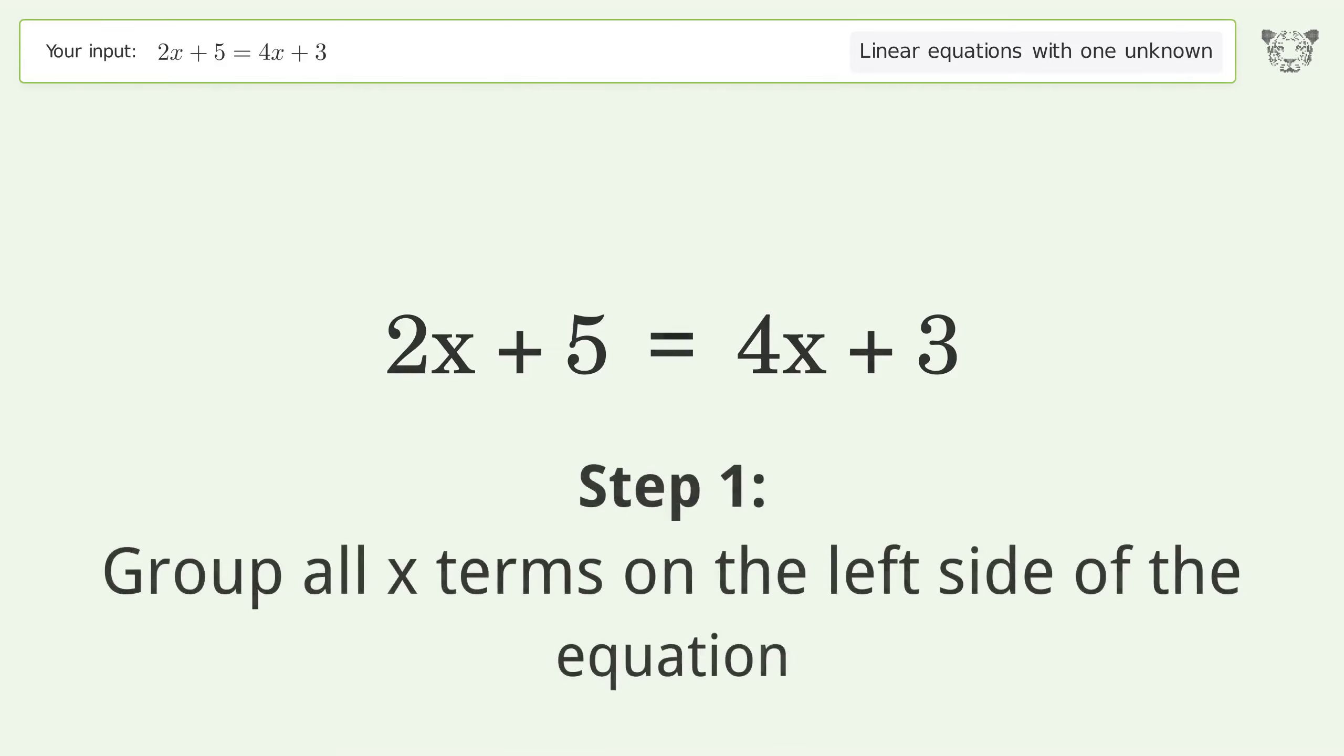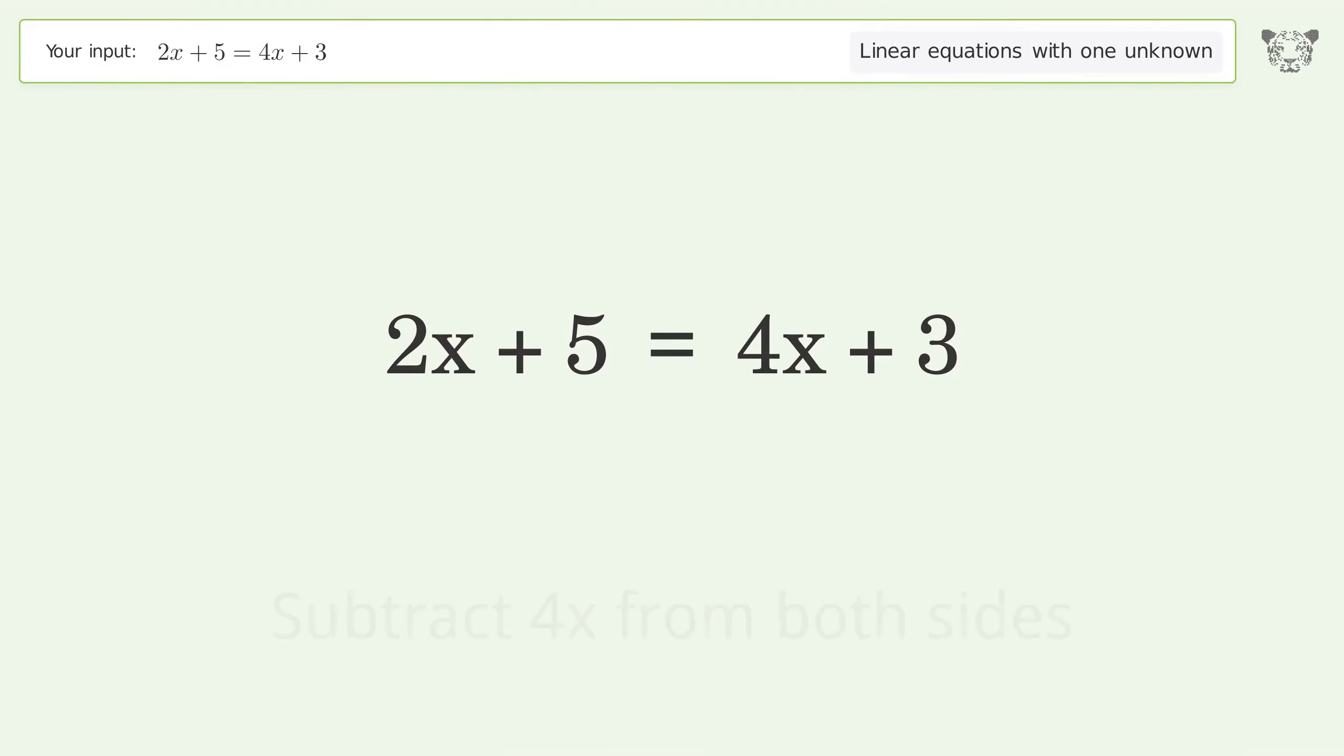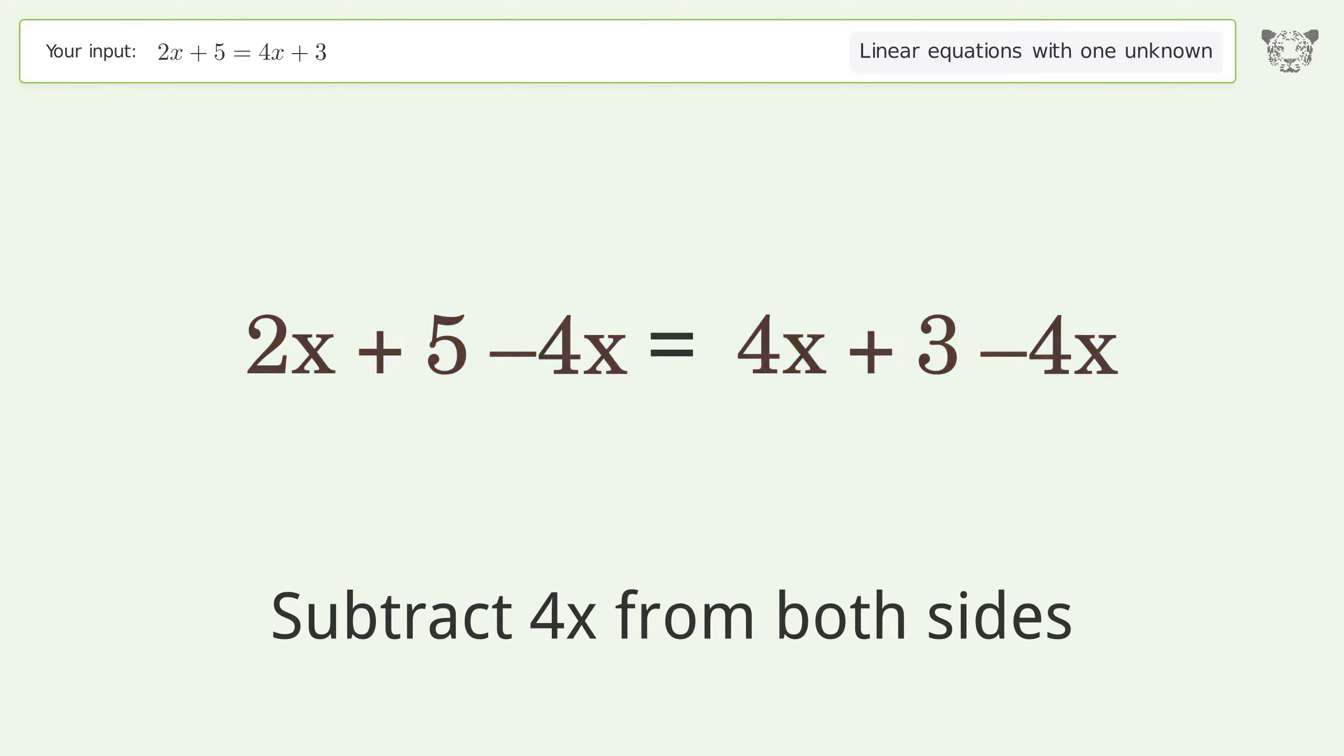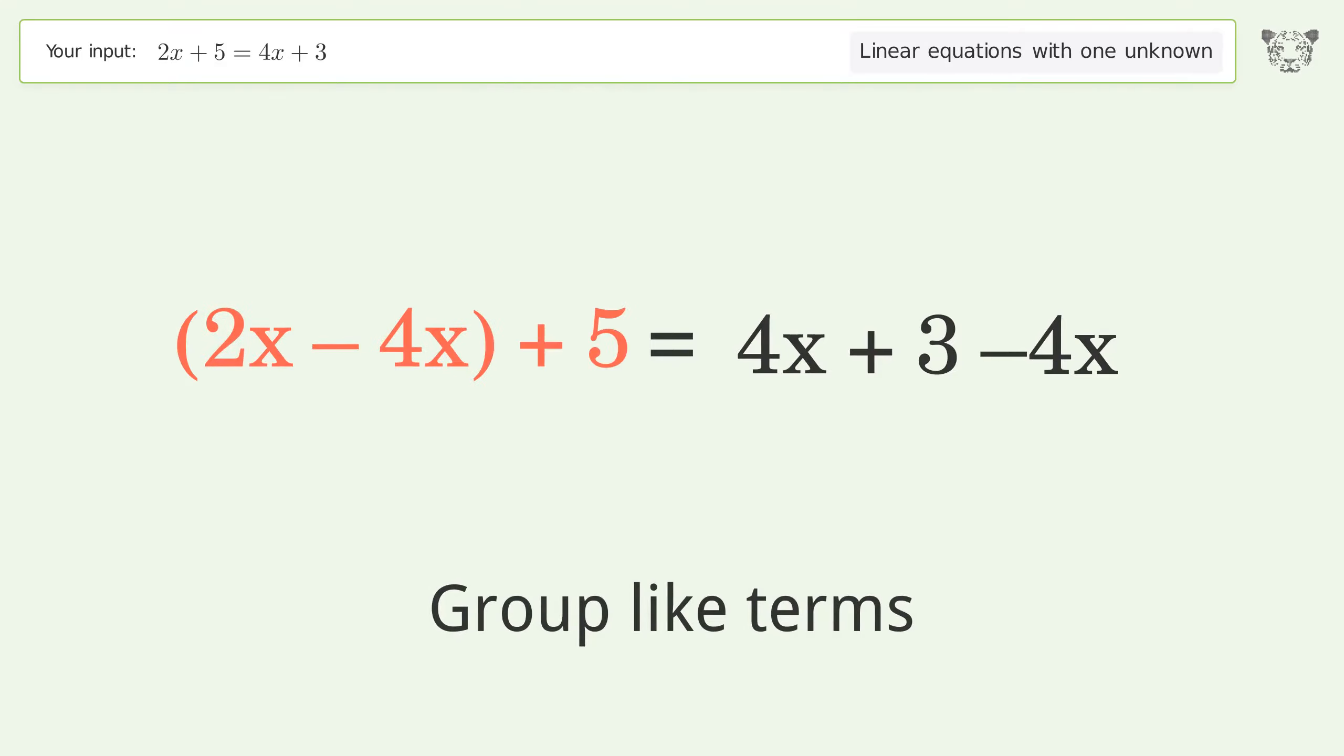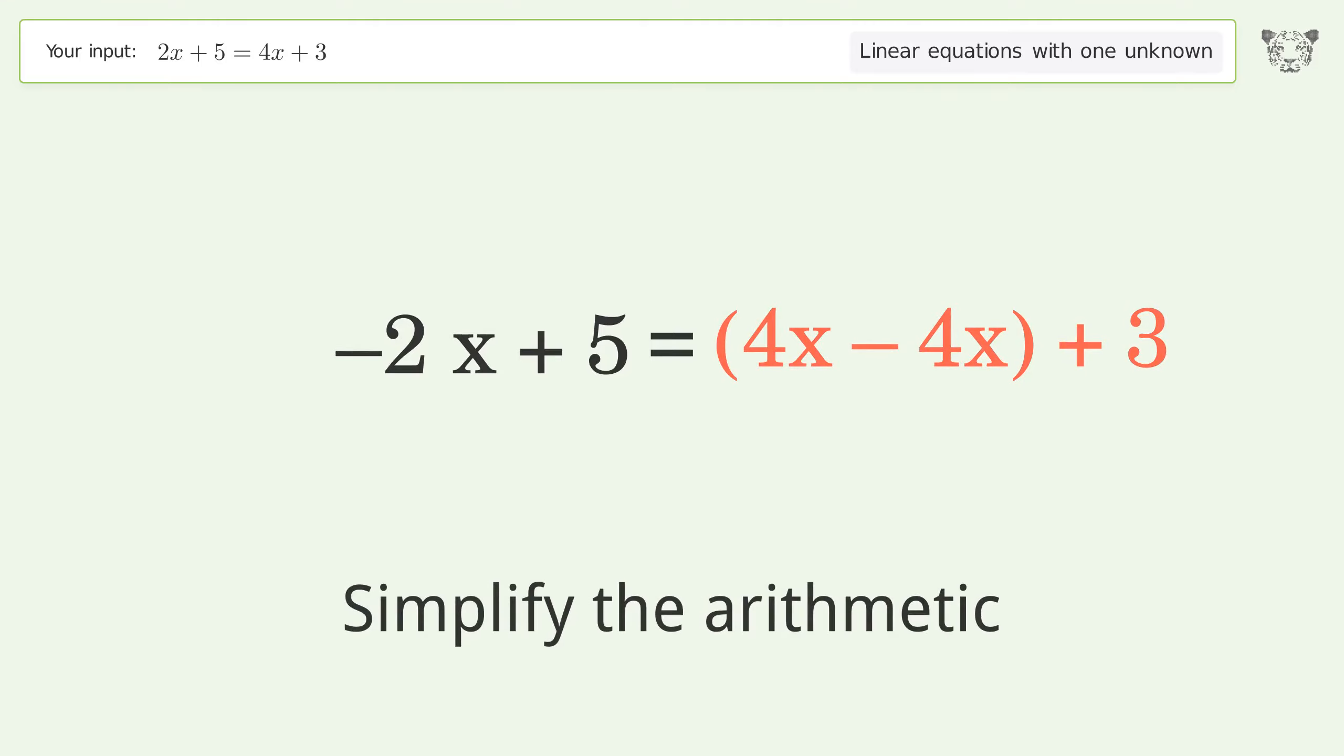Group all x terms on the left side of the equation. Subtract 4x from both sides. Group like terms, simplify the arithmetic. Group like terms, simplify the arithmetic.